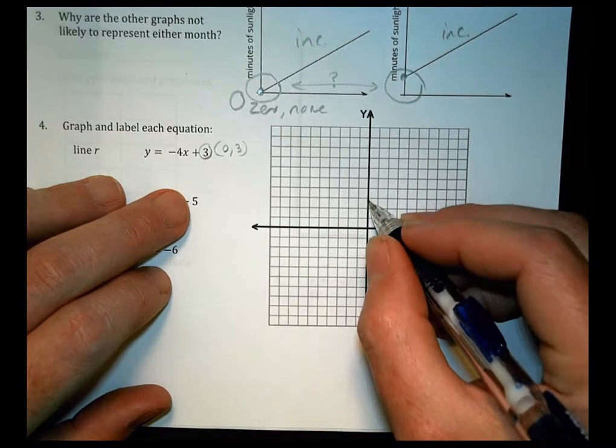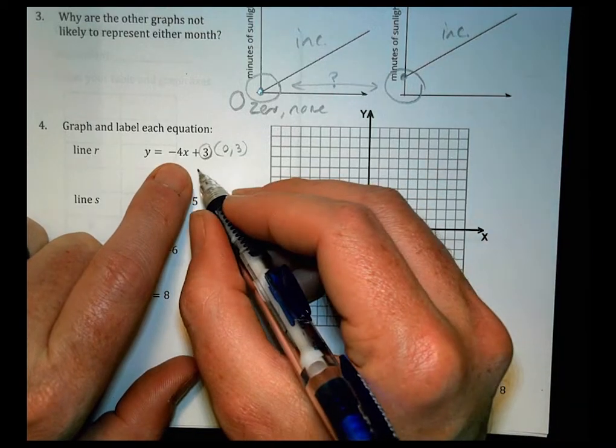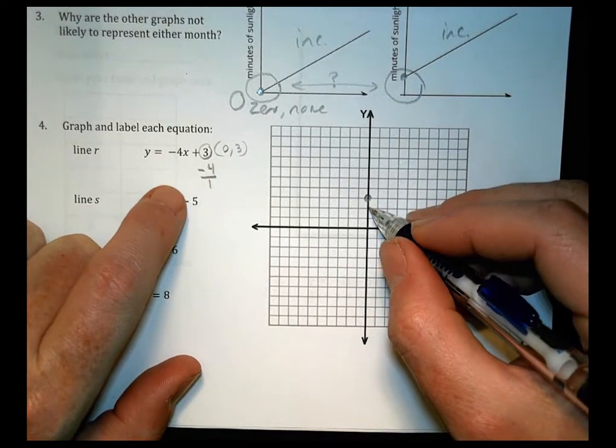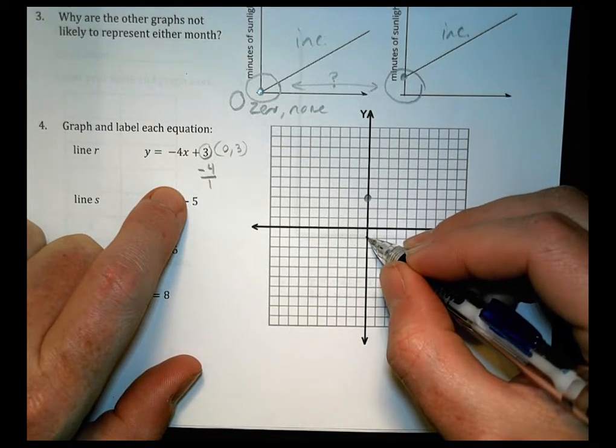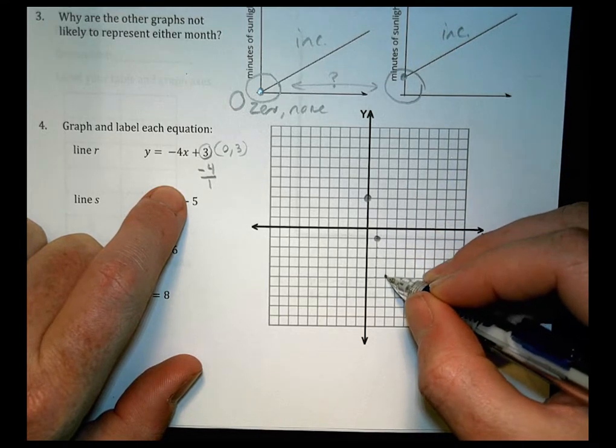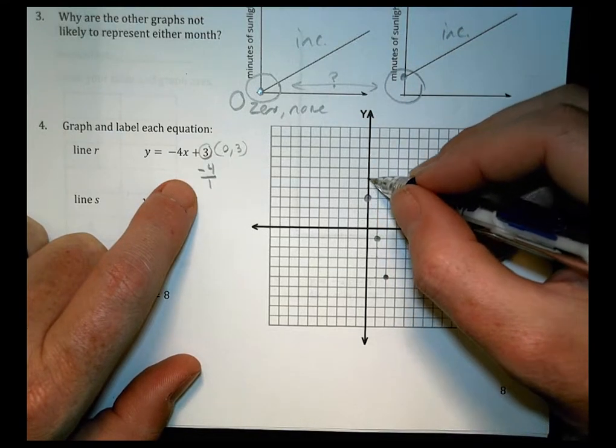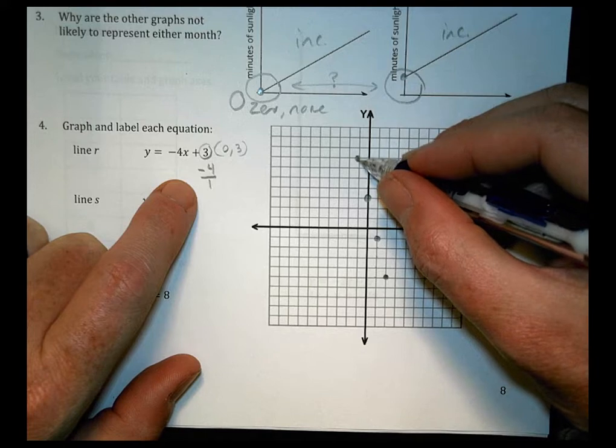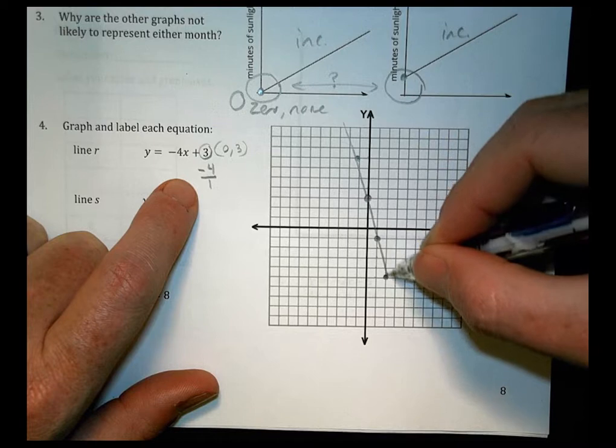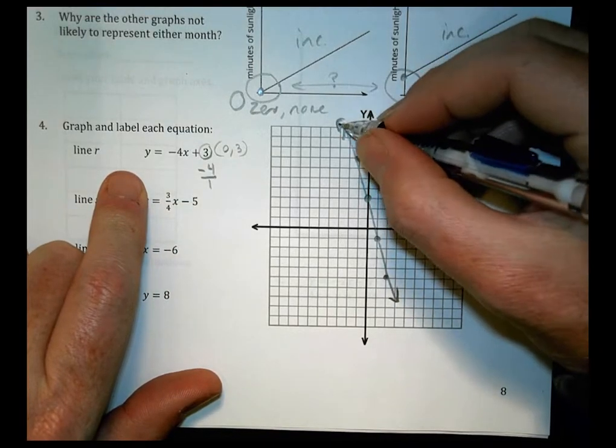First of all, we have line r and we have a y-intercept at zero comma three. So we can go up to one, two, three and put a point right there. Our slope is negative four. So we're going to go down four and over one. We're going to go one, two, three, four and over one. And we can do that again. If I want to go the other direction, I would go up four, one, two, three, four and then over this way one. So our first line is right here and we would label that as r.